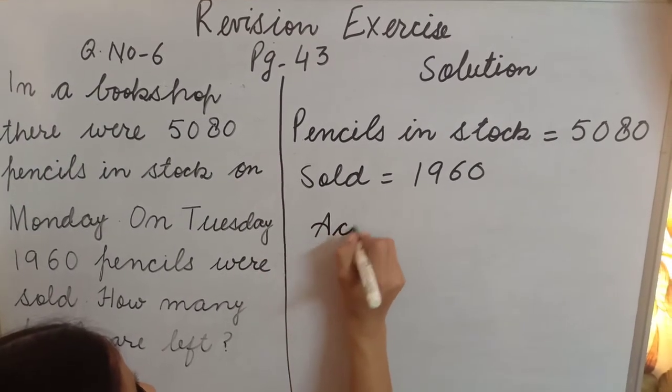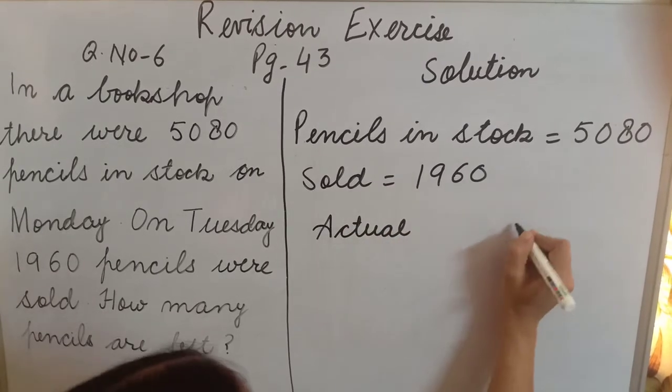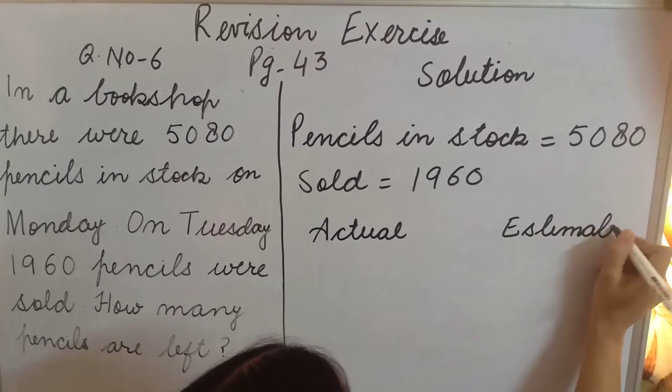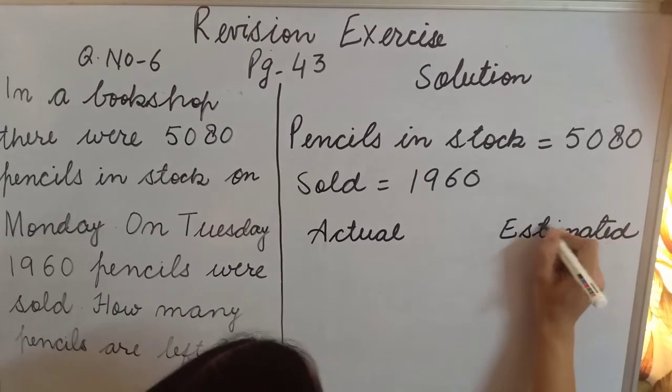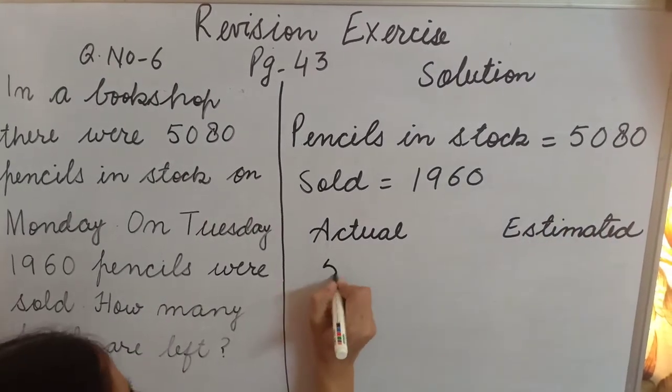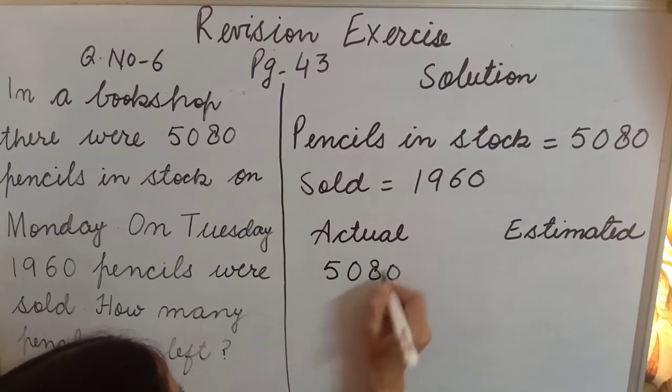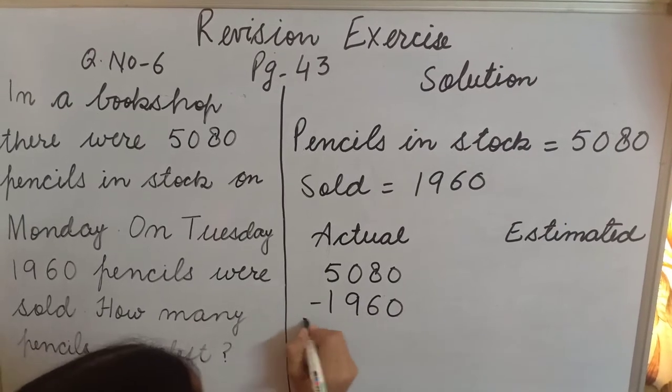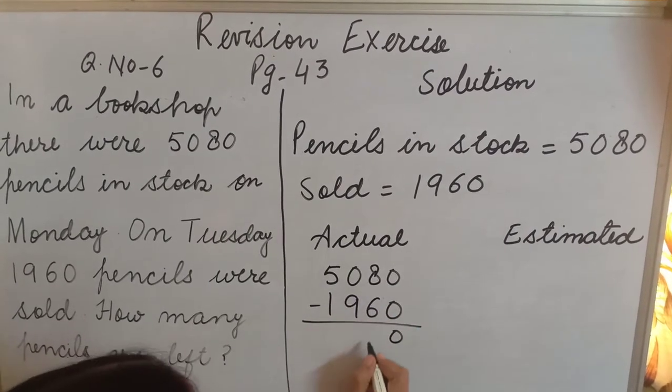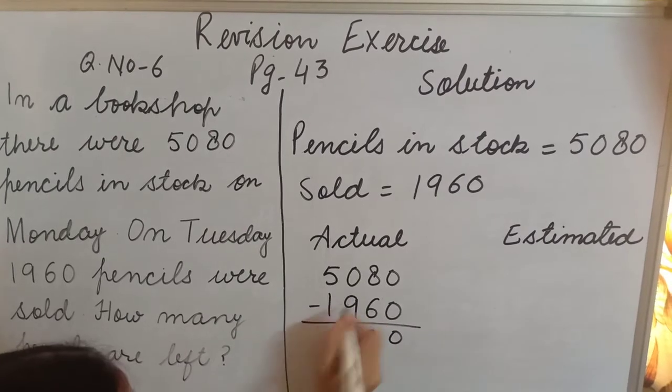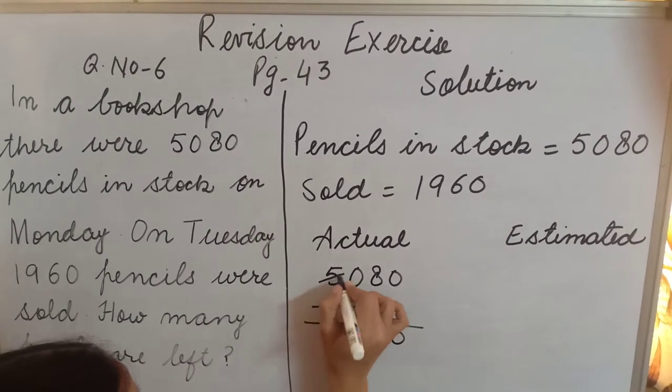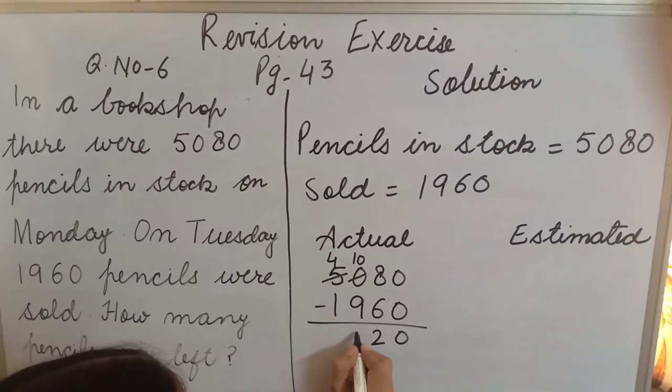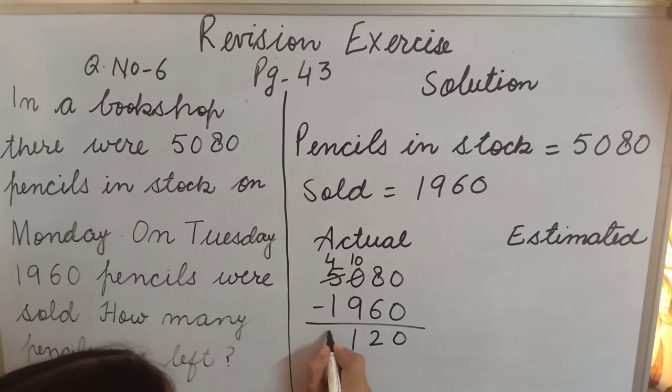Actual and estimated. 5,080 minus 1,960. 0 minus 0 is 0. 8 minus 6 is 2. 0 minus 9 not possible. Take borrow from this 5, becomes 4. Then 10 minus 9 is 1. 4 minus 1 is 3. So 3,120.